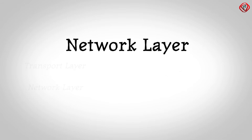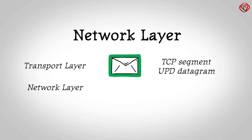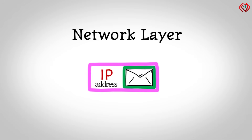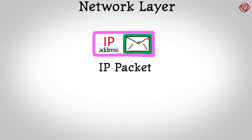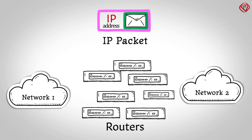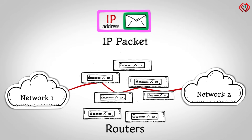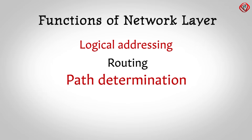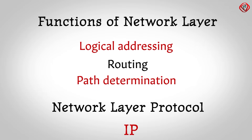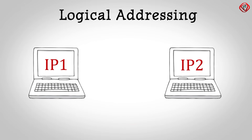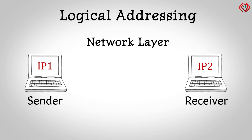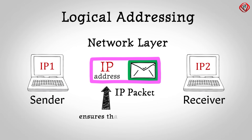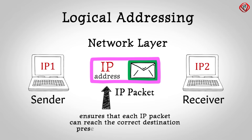Starting with the network layer. The transport layer passes TCP segments or UDP datagrams to the network layer. The network layer adds logical addresses or IP addresses to the TCP segments or UDP datagrams to form an IP packet, and then uses routers to send the IP packets to other networks. The network layer also determines the best path for data delivery. So the functions of the network layer are logical addressing, routing, and path determination. IP is the single standard protocol for this layer. Every computer in a network has a unique IP address, and the network layer assigns sender's and receiver's IP addresses to each segment or datagram to form an IP packet. IP addresses are assigned to ensure that each IP packet can reach the correct destination present in different networks.